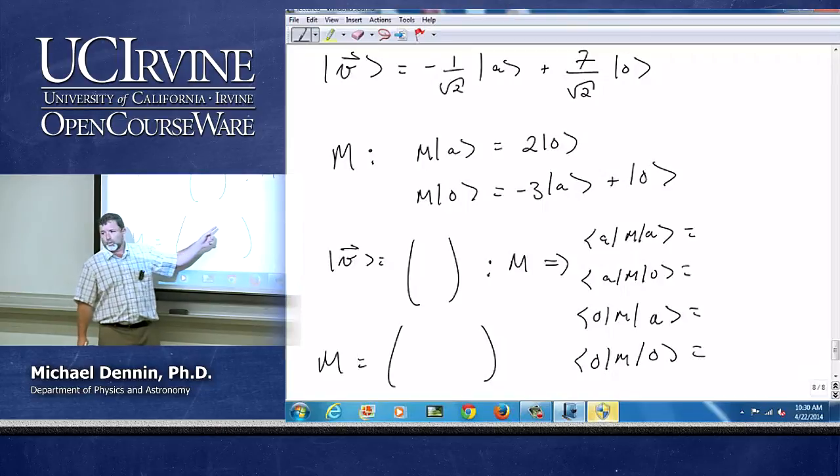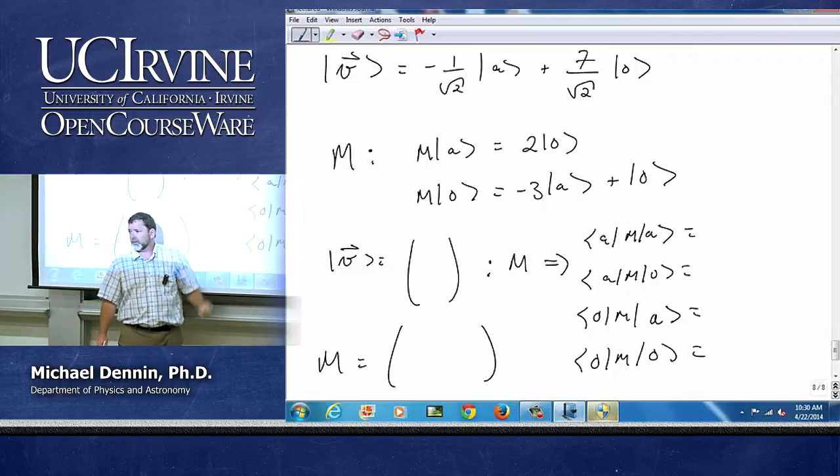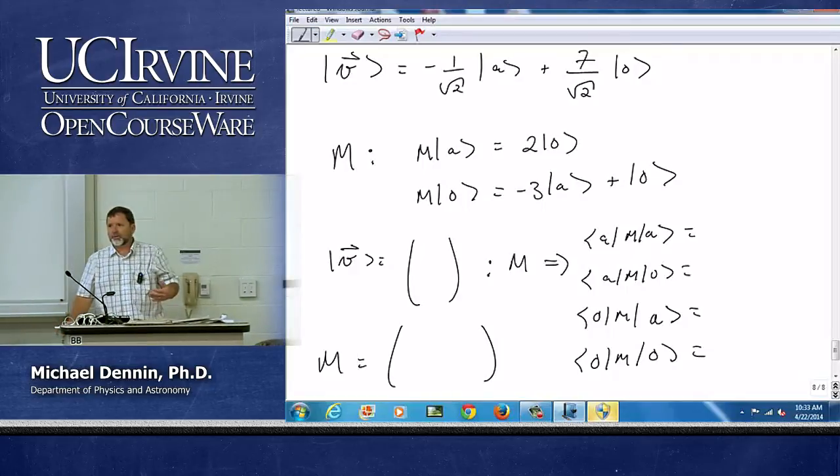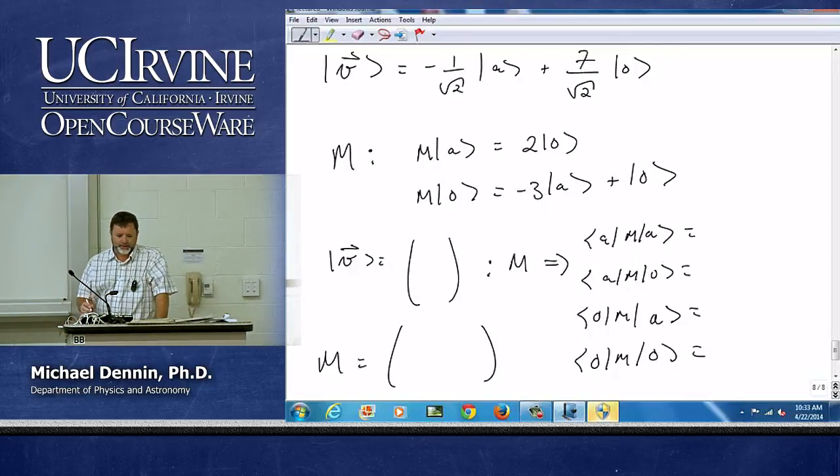And what does M do to O? Negative 3, 1. So you should get 0, 2, negative 3, 1, but do it this way and see if you're operating these correctly. Okay, hopefully you got through at least a couple of these. Let's just look at them real quickly.